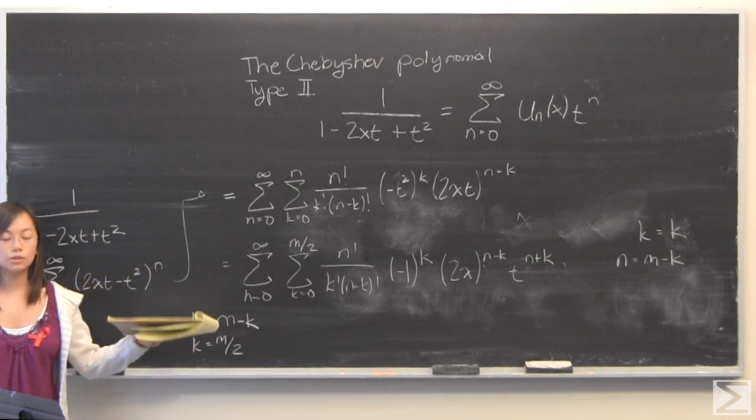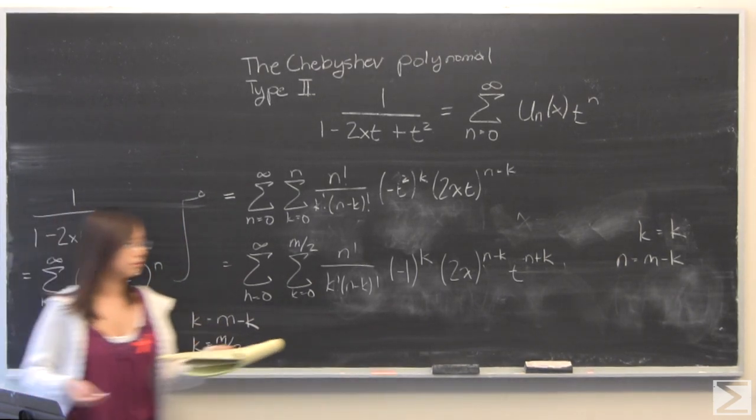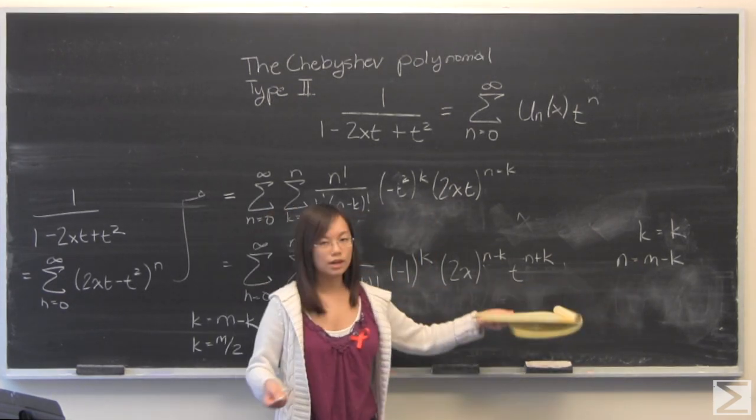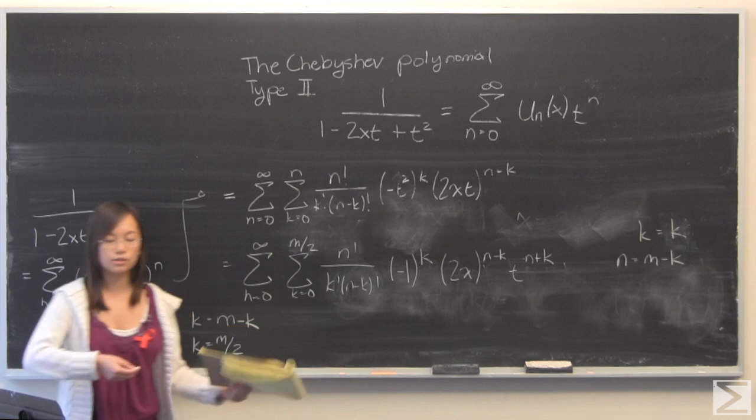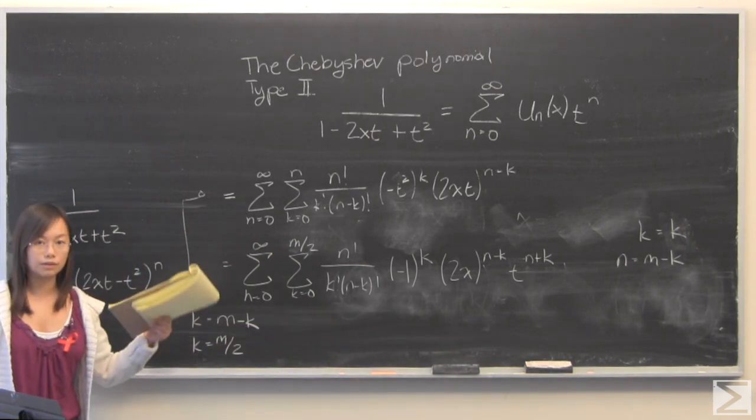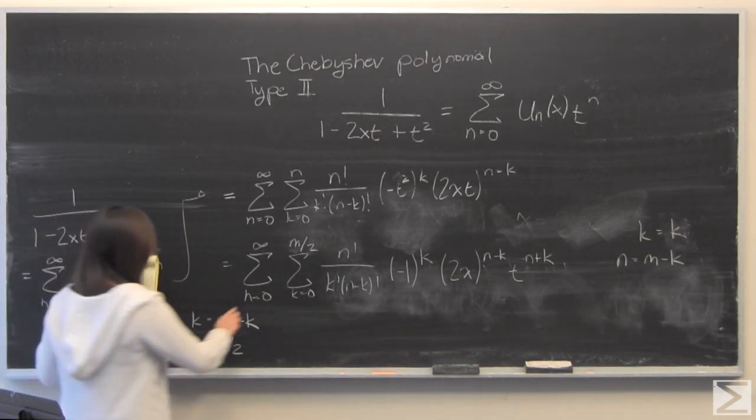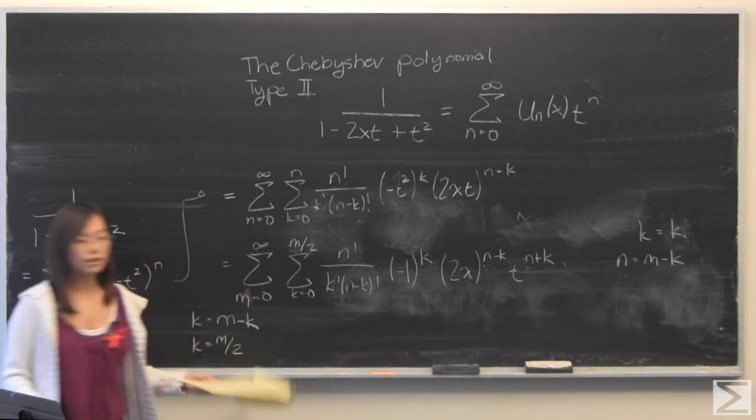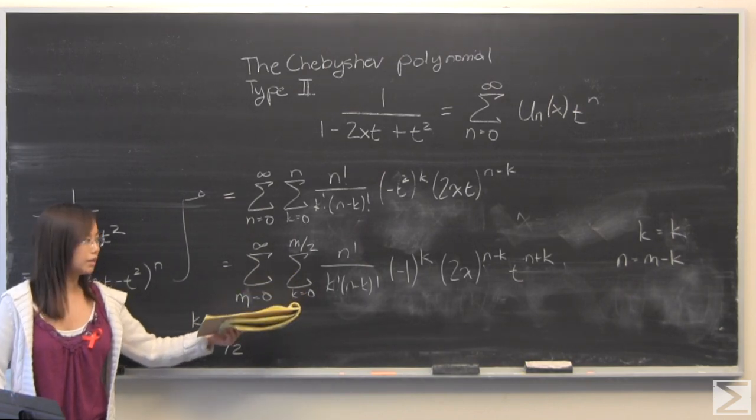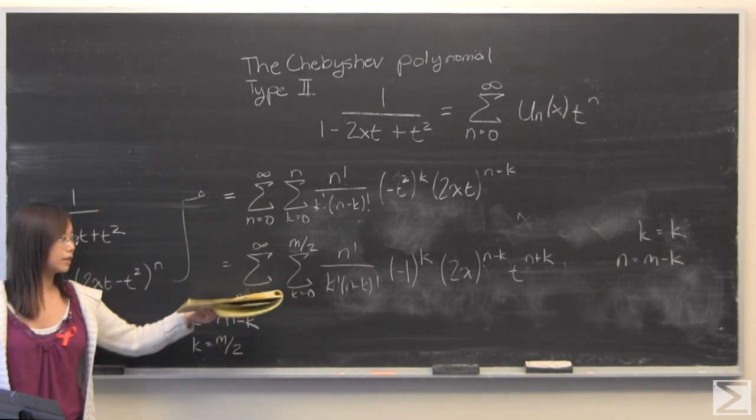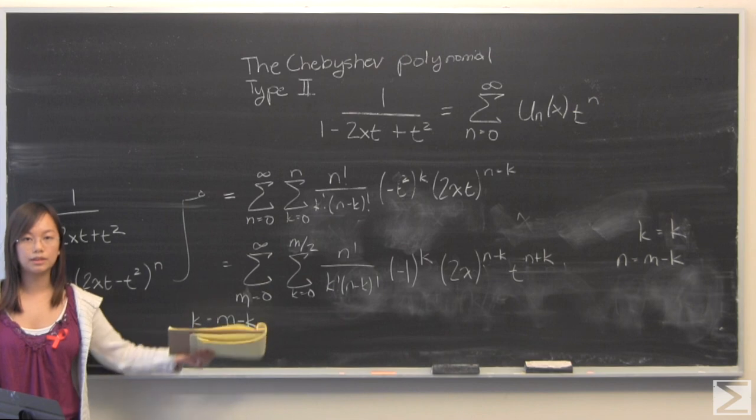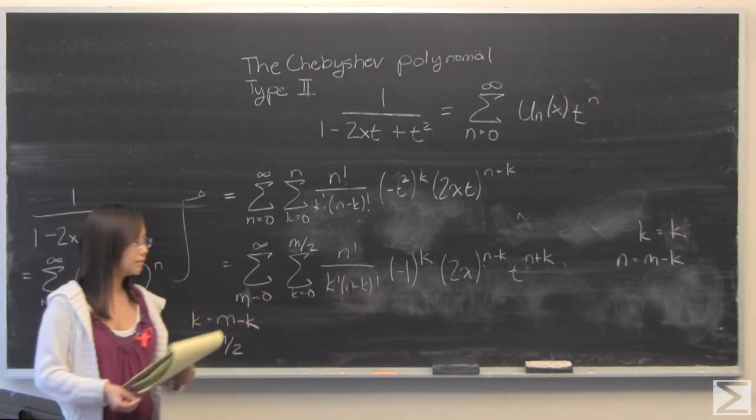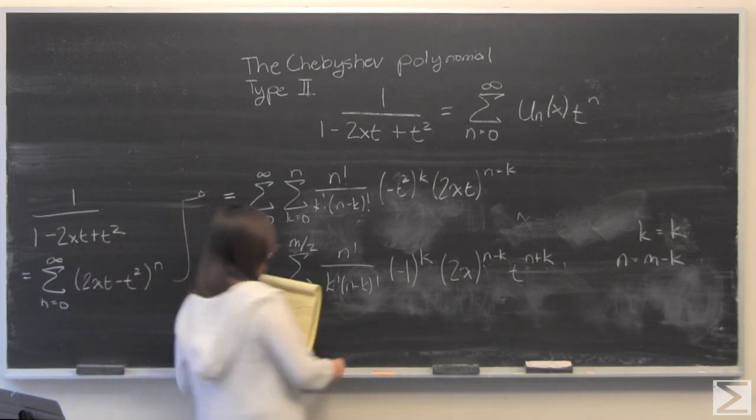Then your m is also going to range from 0 to infinity. The reason why, you can see by our definition, m is going to be equal to n plus k and n goes to 0. k also starts at 0, so it is also going to go from 0 to infinity as well. The next step is just to substitute your new variable in where you see the old variables.